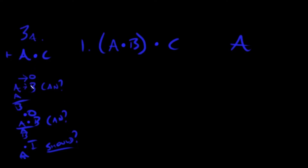Let's look at problem 3a. First, remember: things in parentheses are trapped — we can't get to them yet. Do we have any arrows not in parentheses? No. So we move on. Next: do we have any dots not in parentheses? Yes — this one is not in parentheses, so we can break it apart.